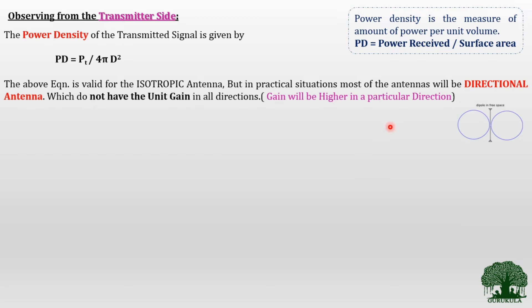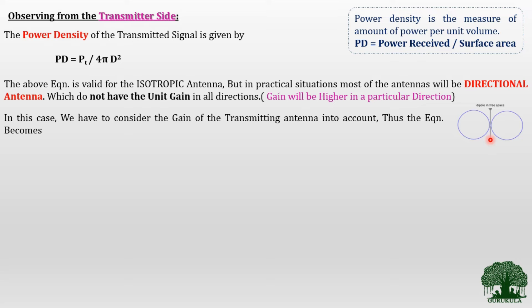When we consider a directional antenna such as a dipole antenna, the gain is maximum in certain directions and minimum or even zero in other directions. It is very important to consider the gain of the particular antenna when dealing with directional antennas. So rewriting the power density equation by incorporating the gain of the transmitting antenna, we get: PD = (PT × GT) / (4πd²), where GT represents the gain of the transmitting antenna. That is all we need to observe from the transmitter side.